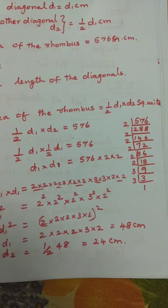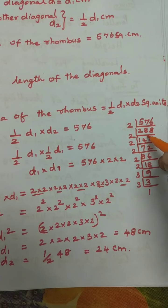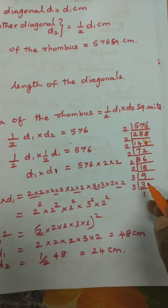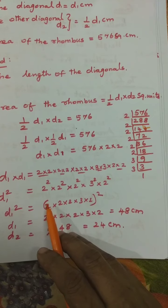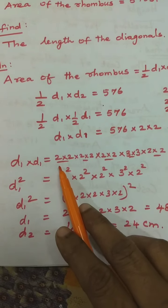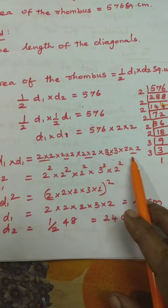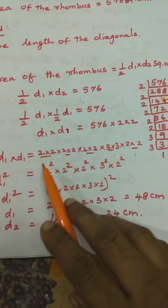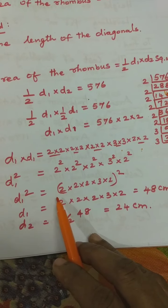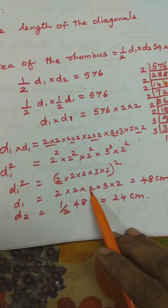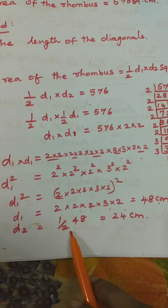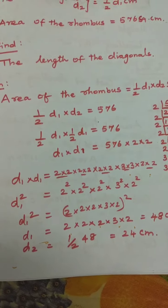576 = 2 × 288 = 2 × 2 × 144 = 2 × 2 × 2 × 72 = 2 × 2 × 2 × 2 × 36 = 2 × 2 × 2 × 2 × 2 × 18 = 2⁶ × 3². So d1² = 2² × 2² × 2² × 3², grouping as (2 × 2 × 2 × 3)². d1 = 2 × 2 × 2 × 3 × 2 = 48 cm. Then d2 = (1/2) × 48 = 24 cm.